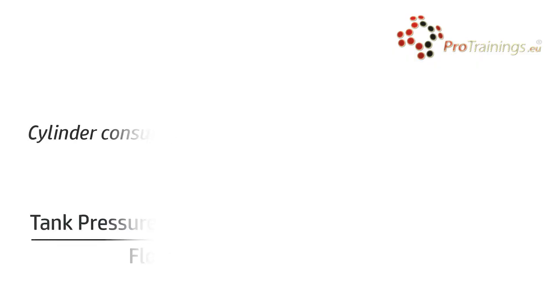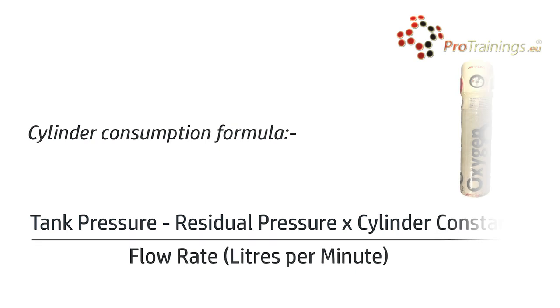The first figure you'll need to know is the cylinder pressure. This should be on the cylinder or you can ask your supplier. In the example we're using, the pressure will be 2000 psi. We'll need to take off a residual pressure of 200 psi. This will allow 200 psi for errors in calculation or initial cylinder filler errors, and also give a short extra supply.